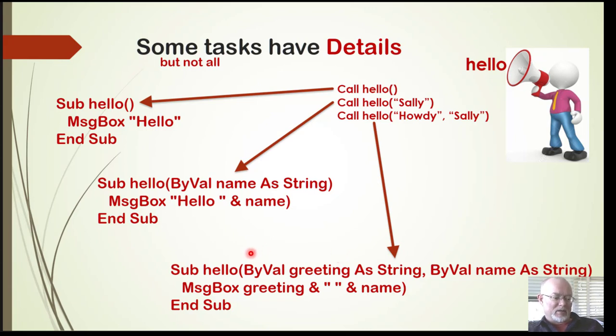One thing you might notice is the use of the ByVal adjective here to indicate how we're passing this information in. We have the ByVal, then the variable name where the value is being passed into, then we specify the data type. All of this is critical for discipline programming and should always be included. Some examples you've seen did not always include the ByVal and maybe didn't even include the data type, but this is discipline programming and should be included.